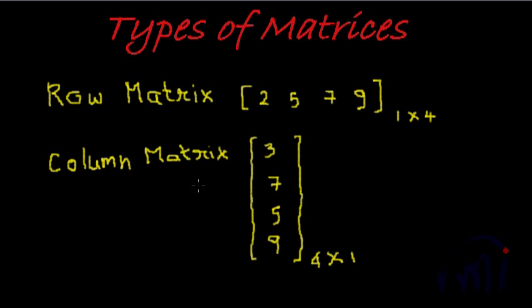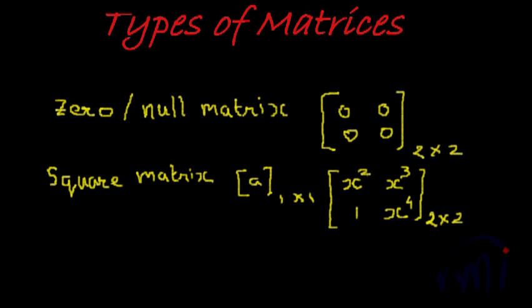Since we have a row matrix, its counterpart — the column matrix — also exists. A column matrix has a single column with multiple rows. In this case, we have four rows but one column. So anything with a single column is called a column matrix.